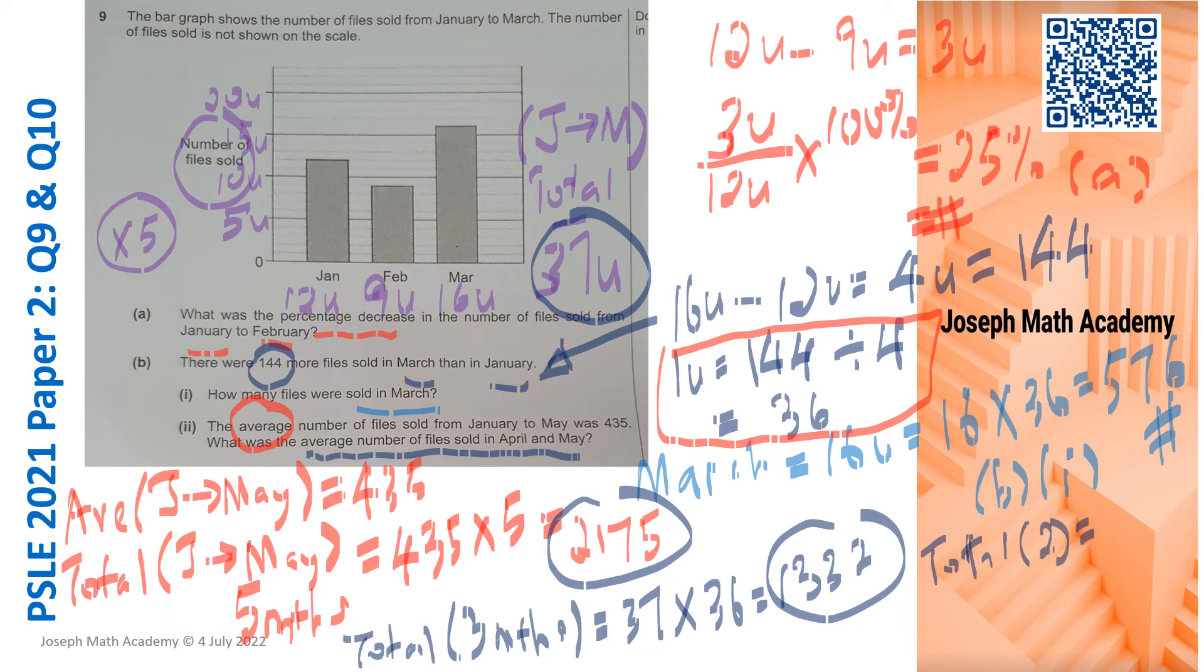Let's subtract them to get the total sold in the last 2 months. That would be 2,175 minus 1,332. Using our calculator we have 843. The average of the last 2 months will be 843 divided by 2 and gives us 421.5.